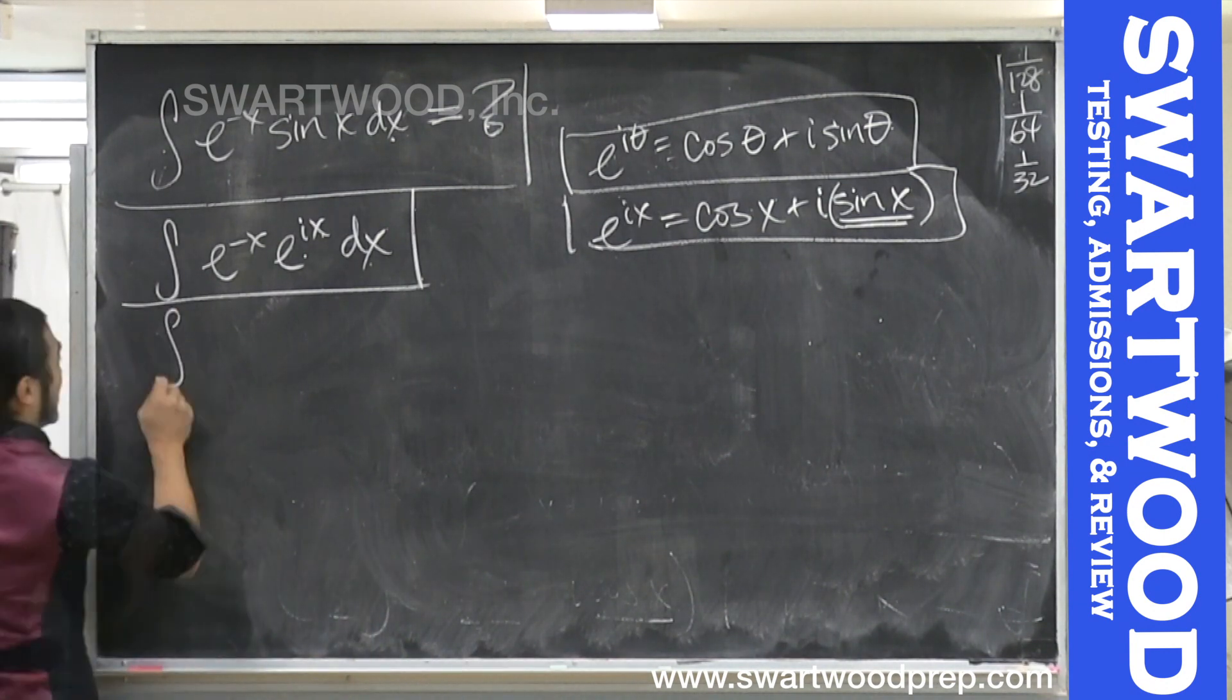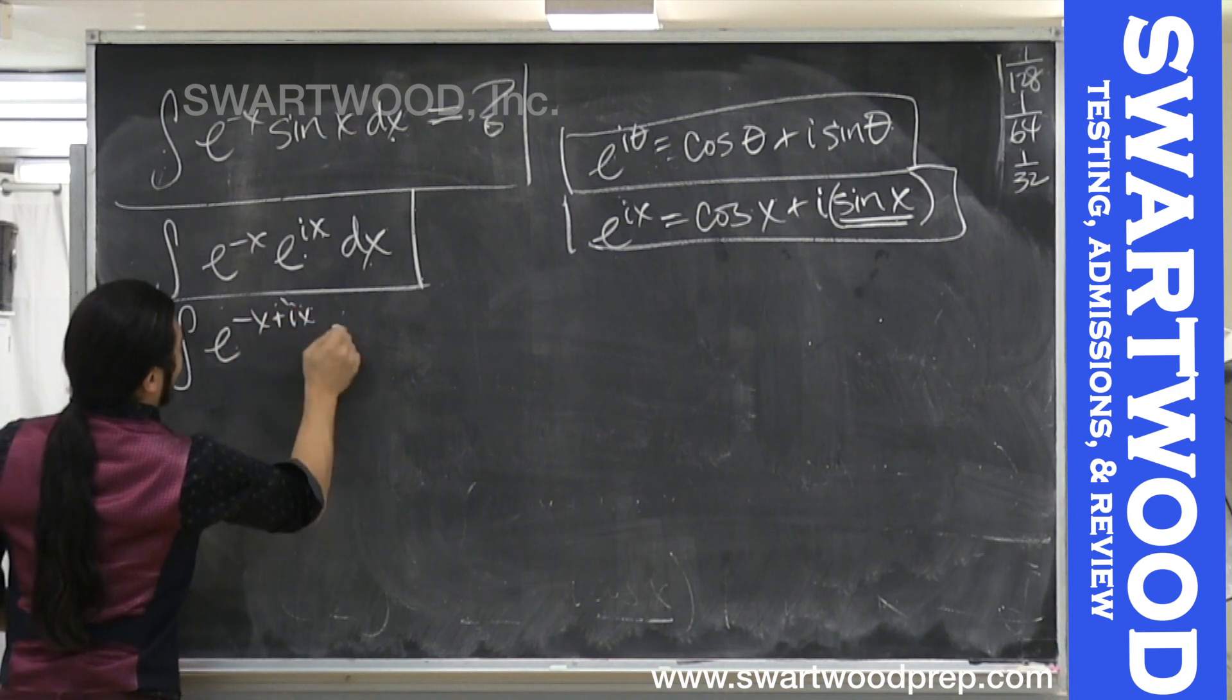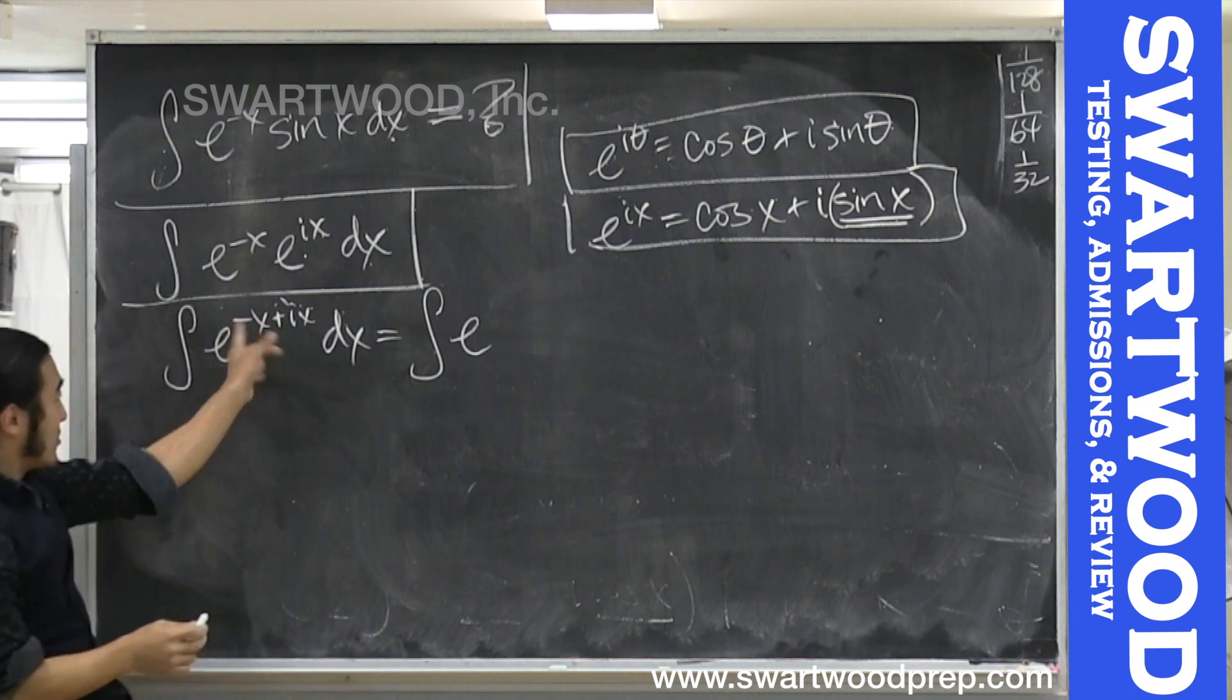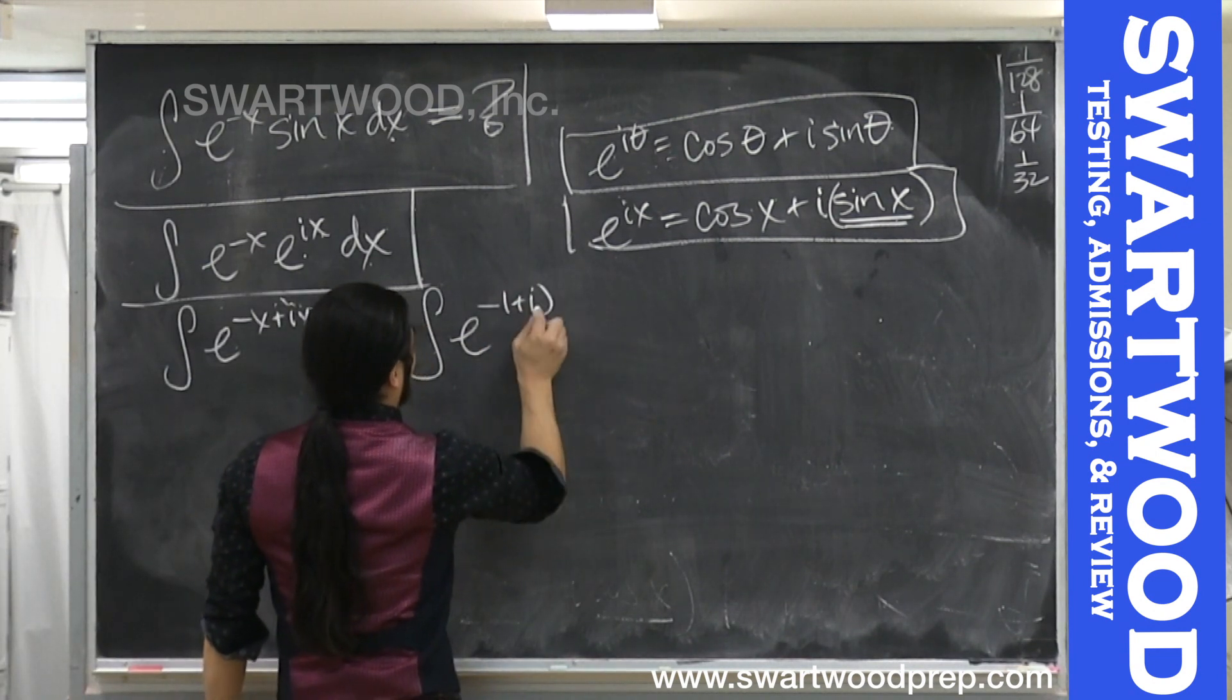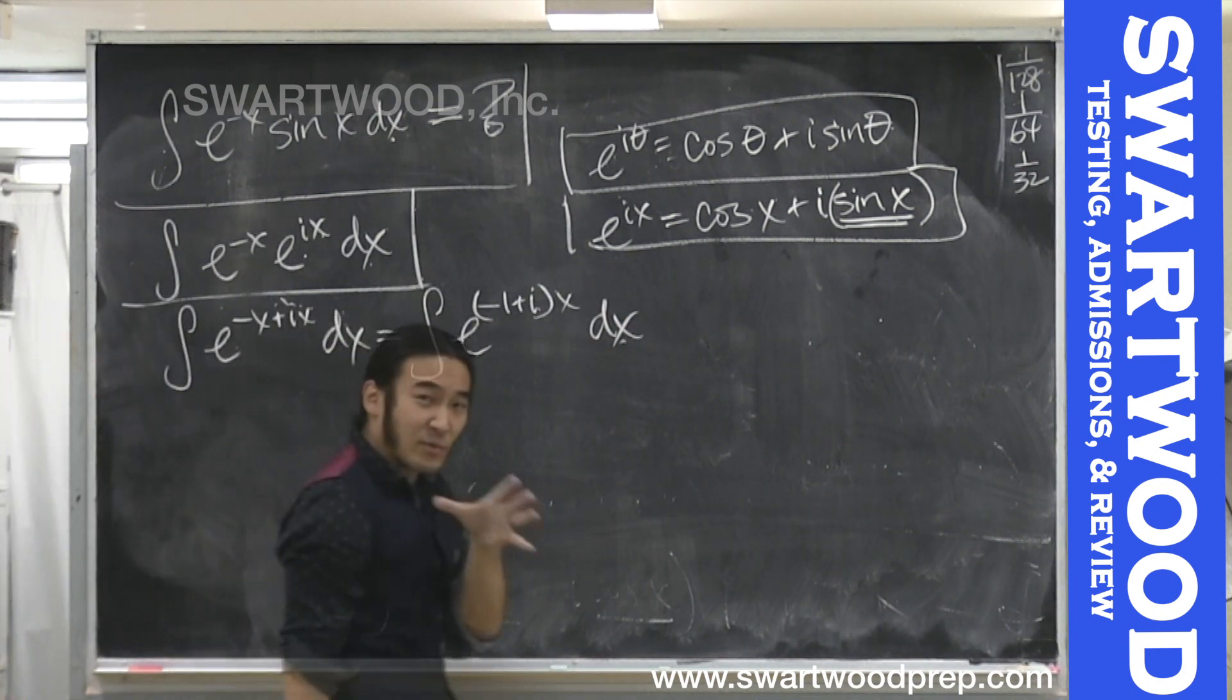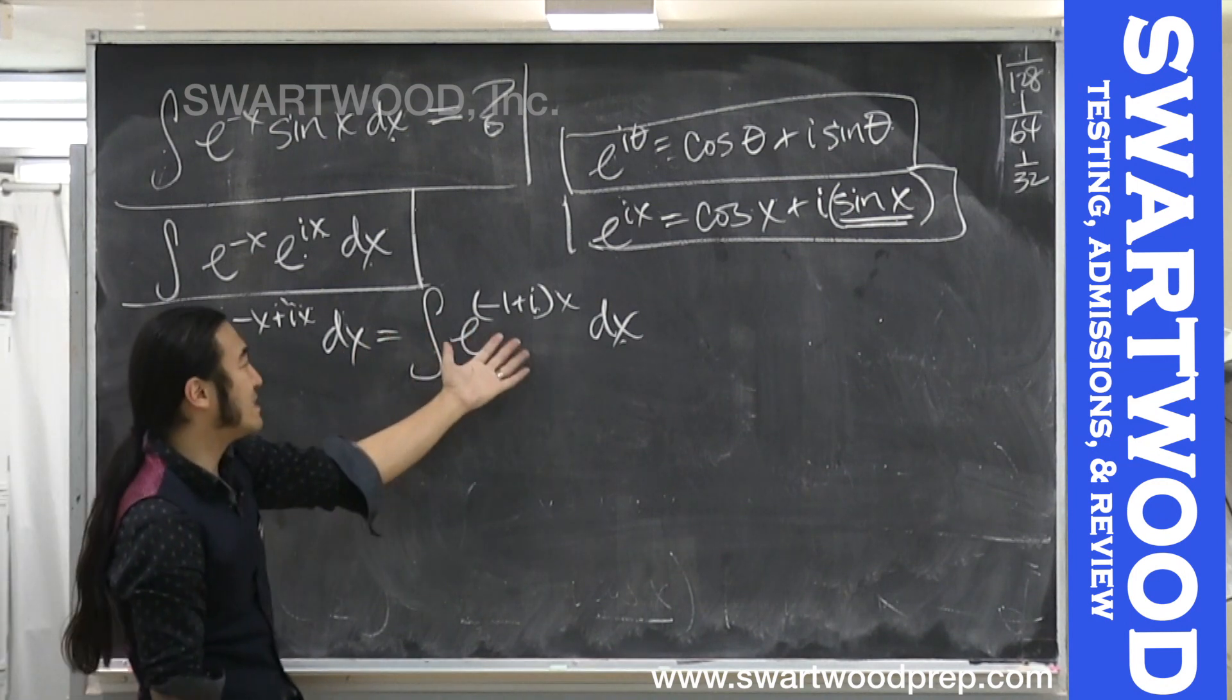So let's first rewrite this. So then we just combine these guys, which if we just factor out, we're going to get this thing. So if you're comfortable with this, now you see why we've moved to the complex form, right? Because look at how easy this guy is to integrate.